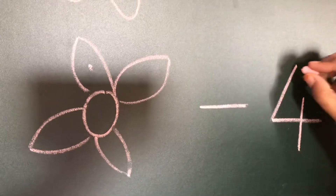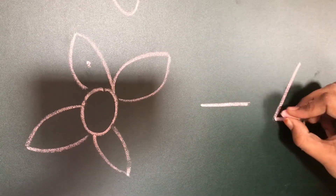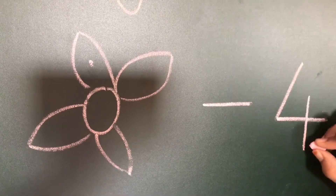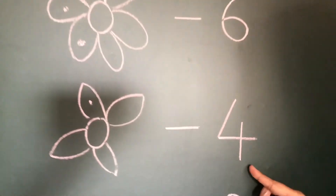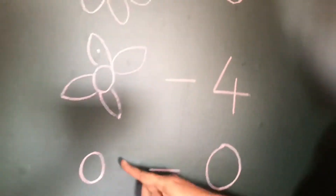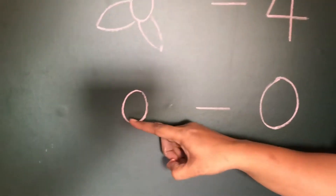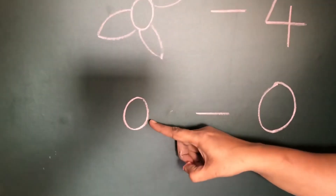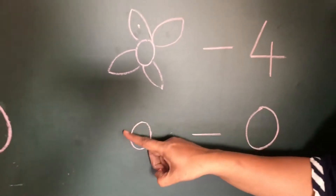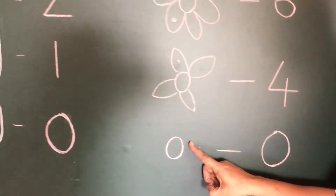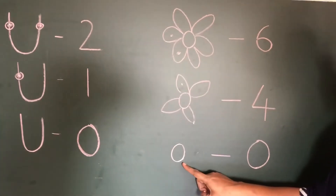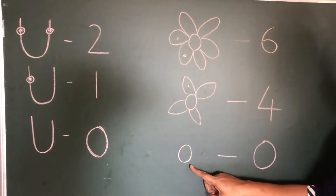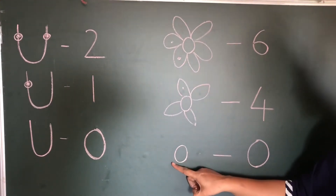I've written the number four. You should be familiar with number recognition. Now this is a flower, but it is not having any petal. Can you see any petal here? No.